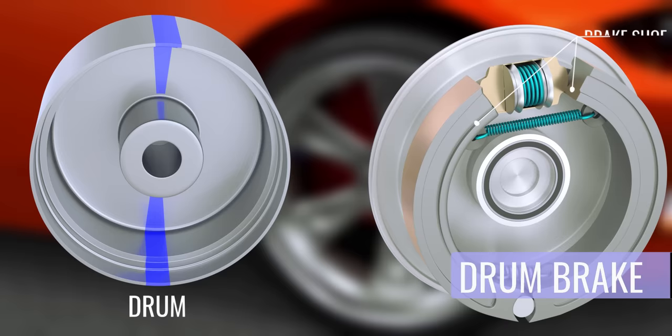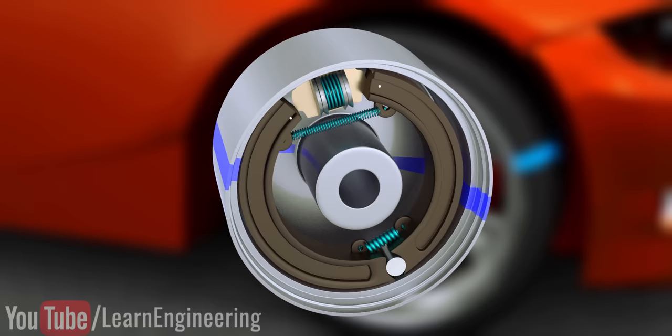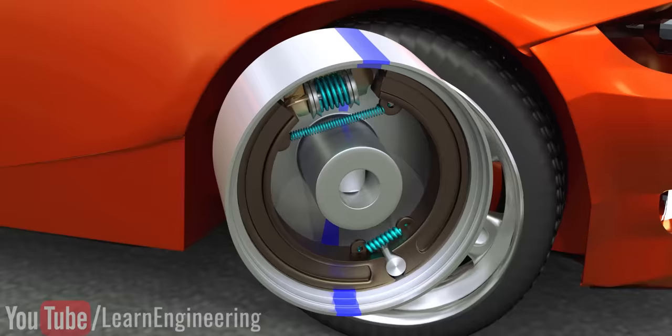Drum brakes ruled the automobile industry for many decades. They are still used in the rear wheels of some cars. Their working was quite simple. Drum of this mechanism is directly connected to the wheels. When you apply the brake, a shoe pair inside the drum expands and due to the frictional force, the wheel comes to a rest.